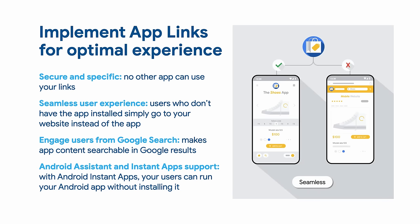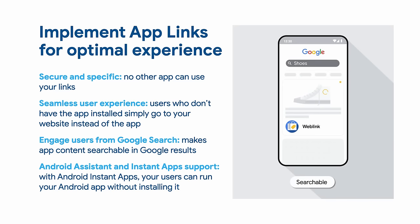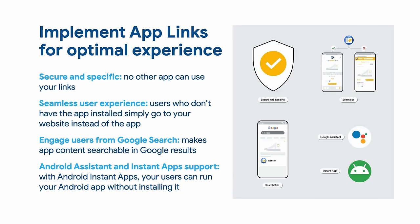Plus, they provide a seamless user experience. It's a single HTTP URL for the same content on your website and in your app. Users who don't have the app installed go to your website instead of the app. This behavior doesn't exist in custom URL schemes, even though it's critical for the user experience. Similarly, on iOS, universal links are the preferred way to implement deep links. For more information on how to implement universal links, check the links in the description below. I'll pass it back to John to discuss how to implement deep links in Flutter.